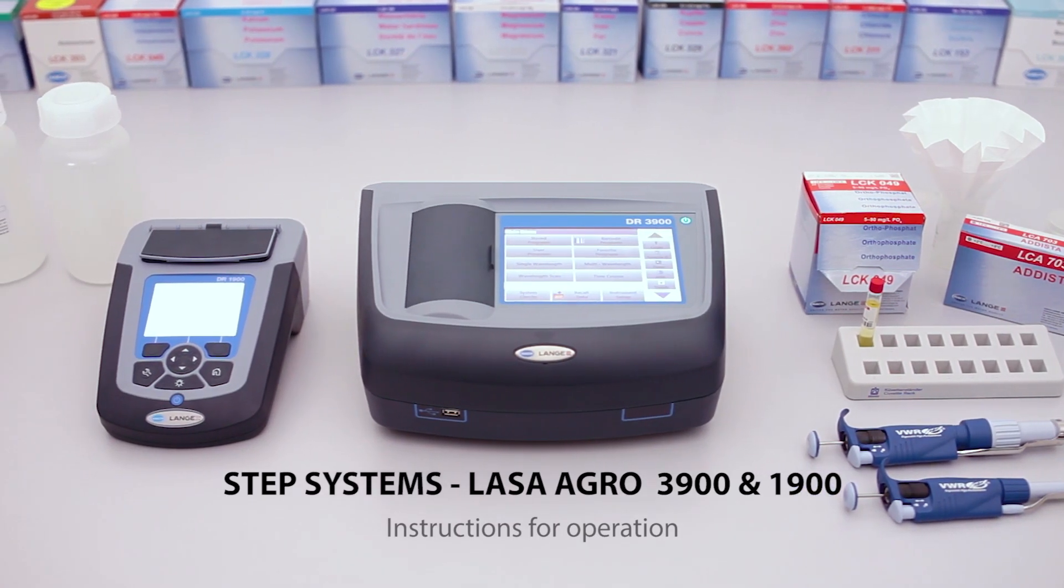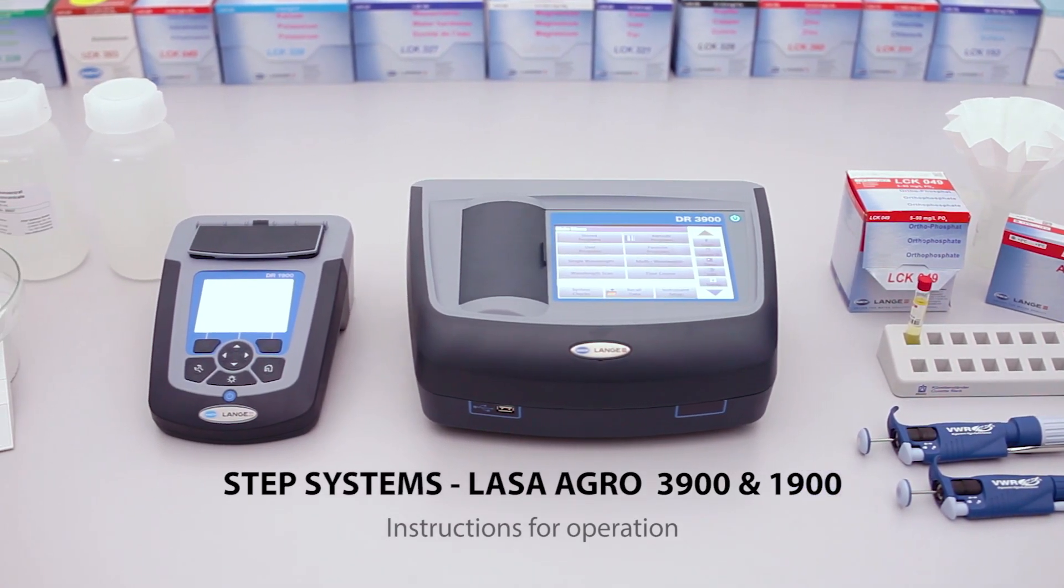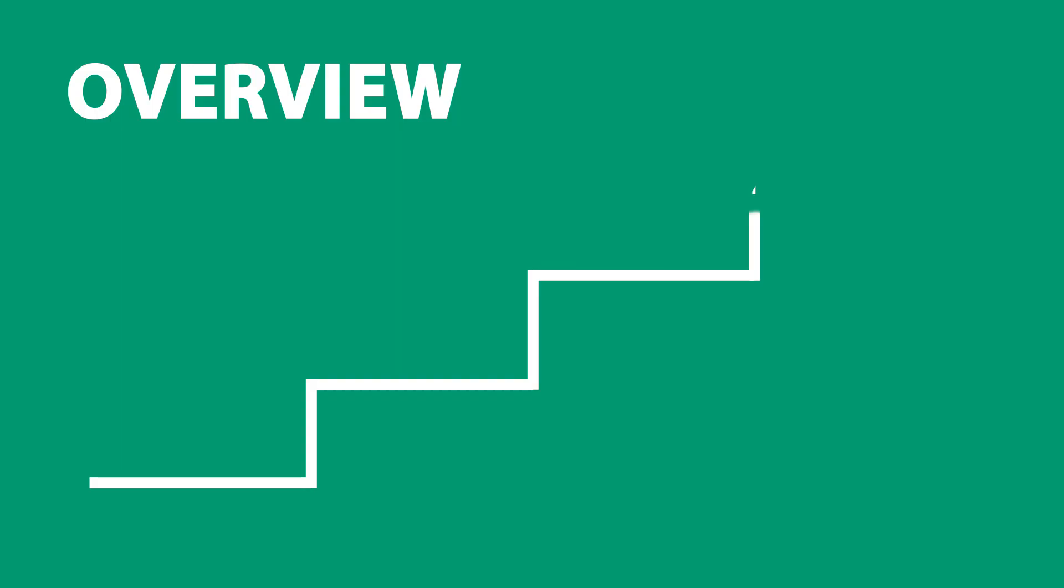Measuring macro and micro elements using the Lassa Agro Laboratory Systems. The complete analysis consists of four steps: sampling, extraction, photometric analysis, and interpretation.